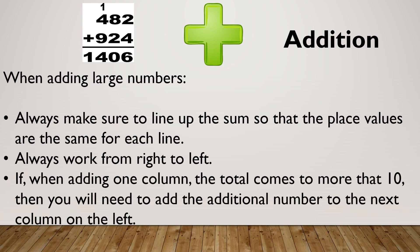When we're adding large numbers together, we need to make sure we line them up so the place values are the same, so that our units or ones are on top of each other. We then need to make sure our tens are lined up, our hundreds are lined up, and thousands are lined up if we have any. We should always work from right to left, starting with your units. If you're adding in one column and the total comes to more than 10, then you need to add that additional number to the next column.